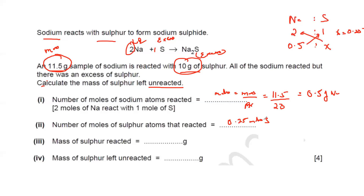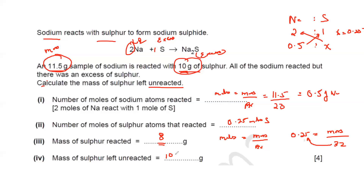Now find the mass of sulphur reacted: moles = mass ÷ molar mass, so mass = moles × molar mass = 0.25 × 32 = 8 grams of sulphur reacted. We had 10 grams of sulphur initially and 8 grams reacted, so the unreacted sulphur remaining is 10 minus 8, which equals 2 grams.